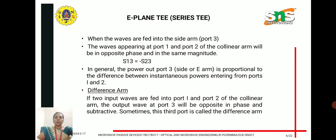When waves are fed into the side arm—that is, input is given to port 3, the E-arm—the waves appear at port 1 and 2. The input is divided among port 1 and 2 in equal magnitude but opposite phase. The S-parameters relate as S13 equal to minus S23. Port 3 is known as the difference arm because the power out of port 3 is proportional to the difference between the two inputs from port 1 and port 2.